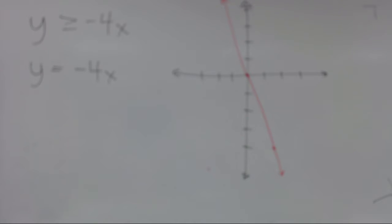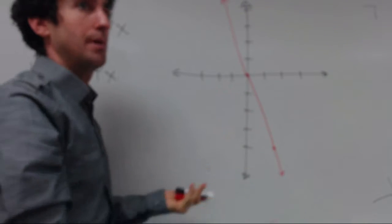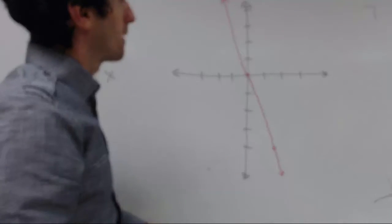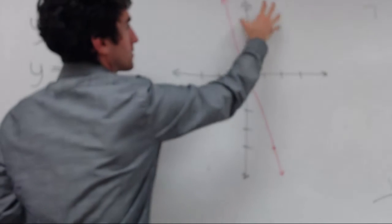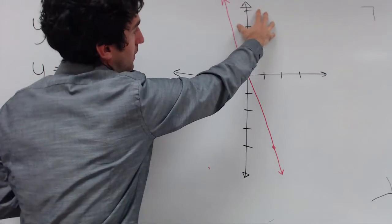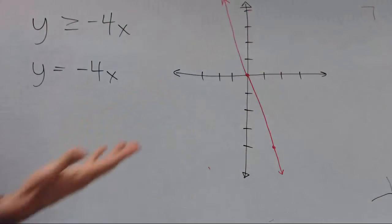Now this one you might be able to tell just from the inequality where we should go. We want to know when y is greater than negative 4x. So when you think of y being greater, you think of going up, because y is up down. So you might be able to tell from the inequality that y is greater than 4x up here, on the top right as opposed to the bottom left.